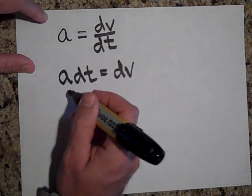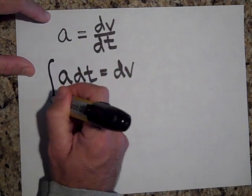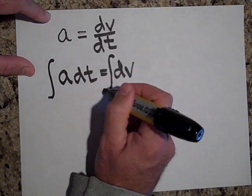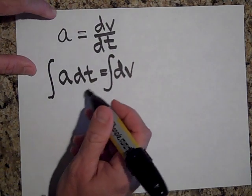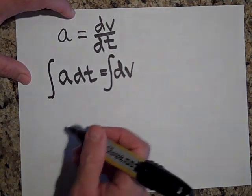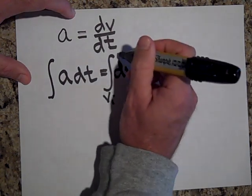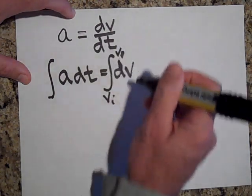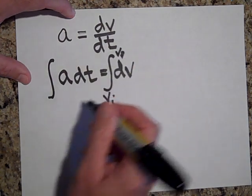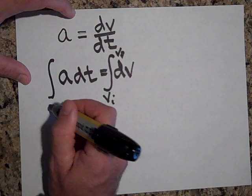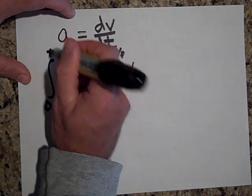Now I'm going to take the integral of both sides — if they're equal, their integrals should be equal. I'll integrate the left side from v-initial to v-final. My boundary conditions always have to be in terms of the differential, so since the differential on the right is dt, I integrate from t-initial equals zero to t-final, which I'll just call t.